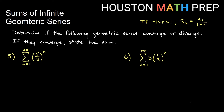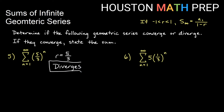Now looking at sigma notation: the sum of (5/3)^n from 1 to infinity. The n power applies to the entire fraction 5/3, meaning we are repeatedly multiplying by 5/3. So the ratio here is 5/3. Since 5/3 is greater than 1 — it's about 1 and 2/3 — it is not between negative 1 and 1, so this series diverges.